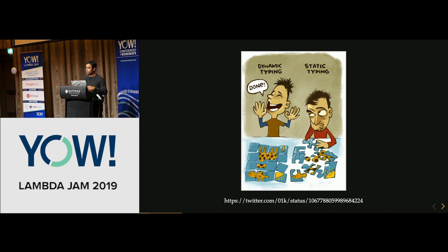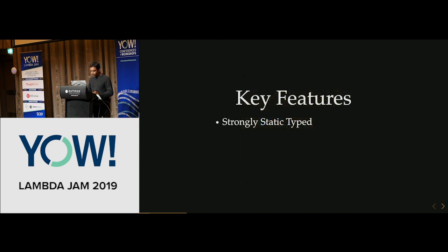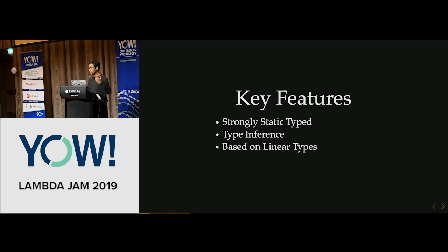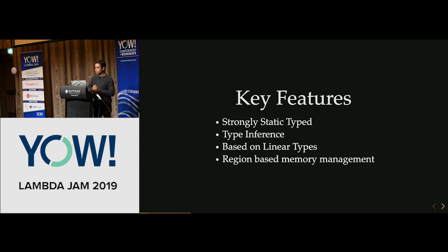In Rust, the compiler is a friend. You might have to spend more time to make your program compile, but once it compiles it generally works. Rust is statically typed and has type inference. The unique features are it's based on linear types with an ownership model, and region-based memory management. Together these give Rust the memory safety — it's free from data races and does not have a garbage collector, so there's no runtime cost associated with it.